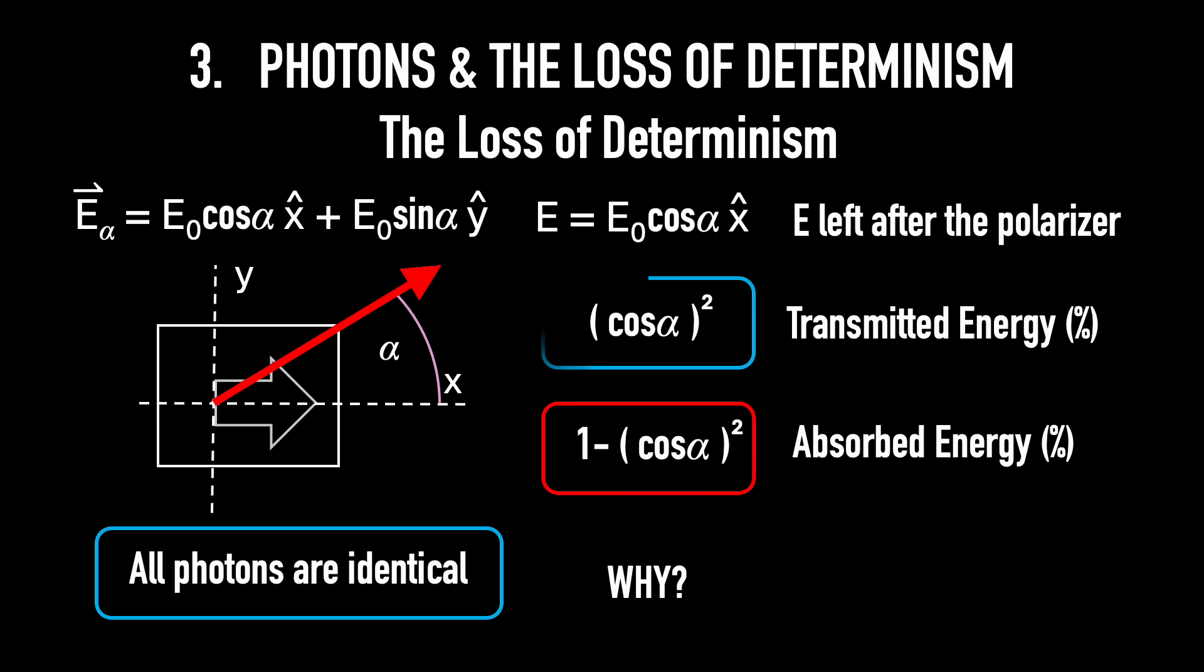A fraction of photons go through, while the rest don't. It's a total disaster for classical physics. So, possible ways out. One, the polarizer might have a substructure, but that's not true. Two, maybe the photon has some hidden variable, a property we don't know about.